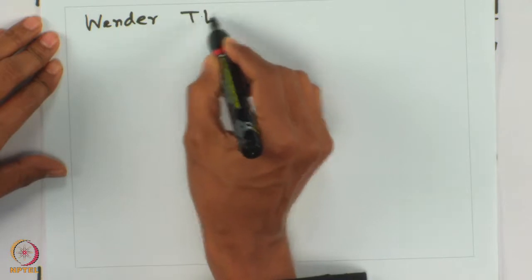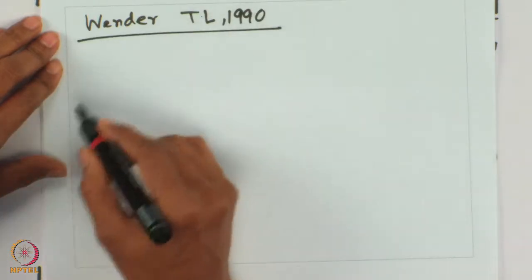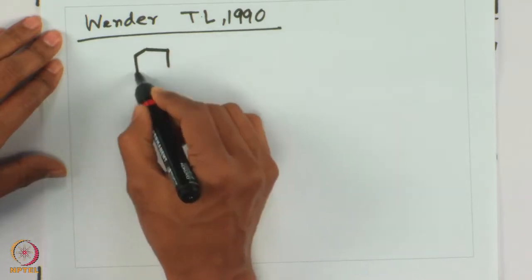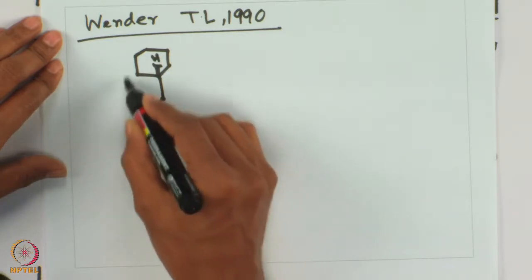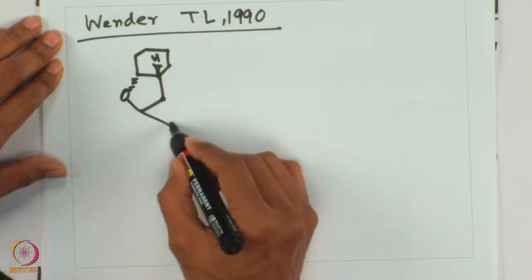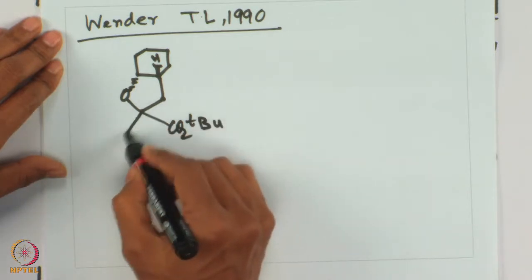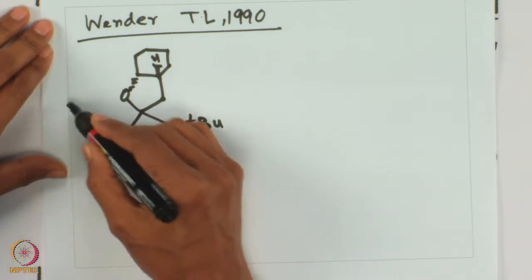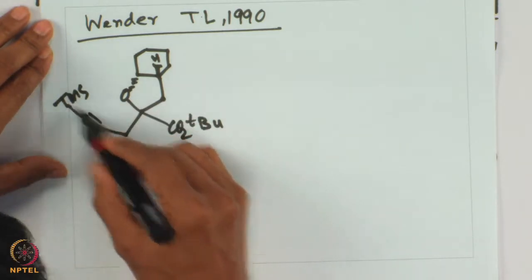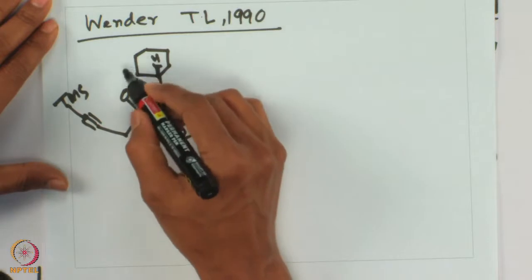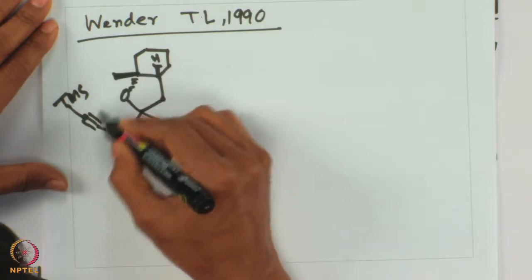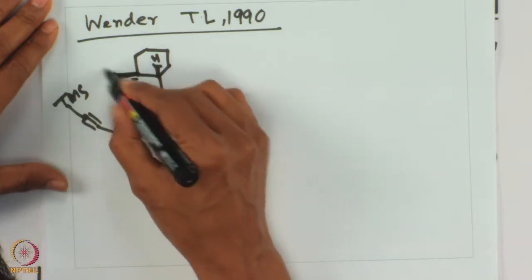Let us look at natural product synthesis by Wender, reported back in 1990. They reported an advanced intermediate where enyne components are beautifully placed — the substrate has a CO2-t-Bu ester and an alkyne. Since terminal alkynes are not tolerated, a TMS-protected internal alkyne is used, which is effectively a masked terminal alkyne that can be deprotected later.